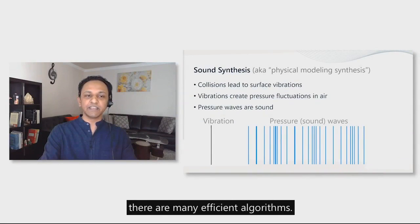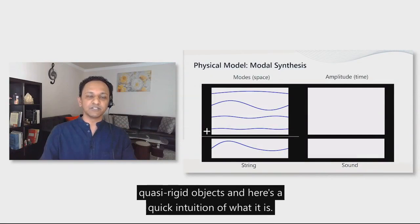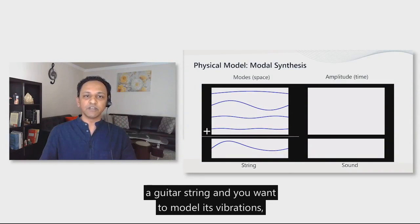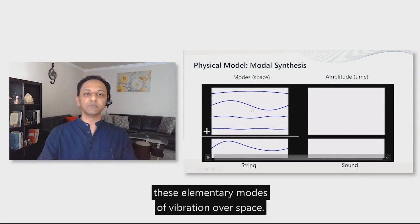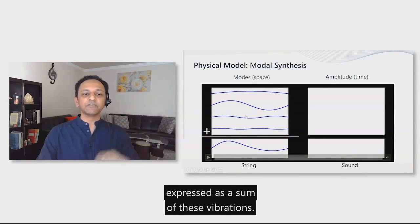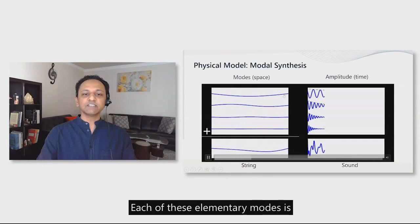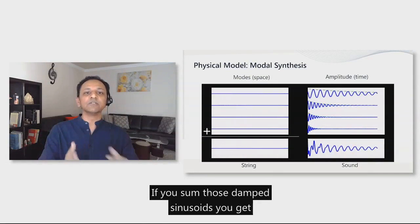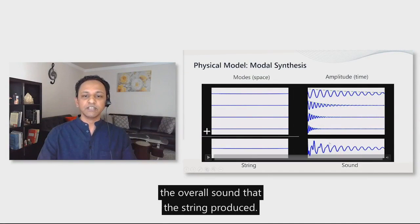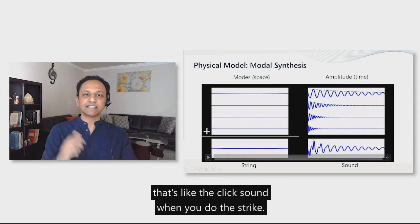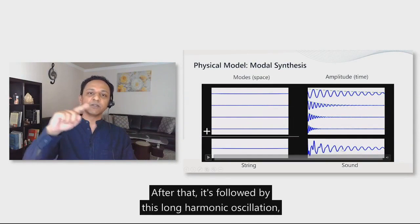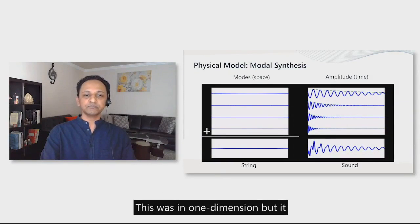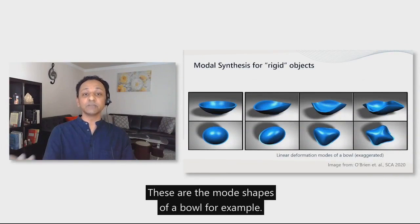To model this physics, there are many efficient algorithms. One of them is modal synthesis for quasi-rigid objects. Here's a quick intuition of what it is. Suppose you have a one-dimensional string, like a guitar string, and you want to model its vibrations. What you can do is break down its vibration into these elementary modes of vibration over space. Then any vibration of the string can be expressed as a sum of these vibrations. Each of these elementary modes is producing a corresponding sound to the right, which is a damped sinusoid. If you sum those damped sinusoids, you get the overall sound that the string produced. You can see initially in the sound, there's a lot of transient structure. That's like the click sound when you do the strike. After that, it's followed by this long harmonic oscillation. That's the ringing of the bell afterwards. This was in one dimension, but it does generalize to three dimensions. These are the mode shapes of a bowl, for example.